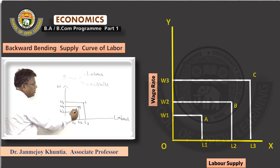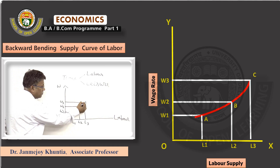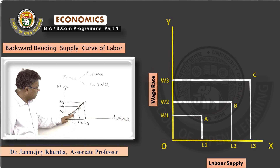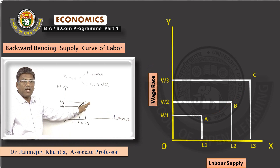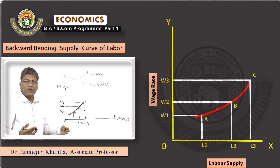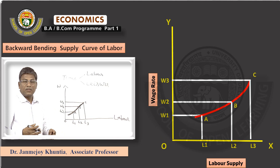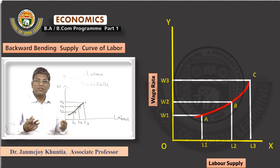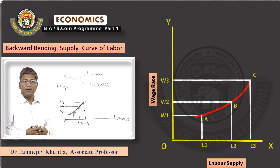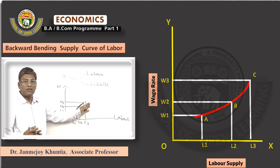Look at the locus A, B, C — join it. This is an upward sloping labour supply curve. The reason is that labour supply increases to generate more income, as the individual is at the subsistence level and needs more money. So the individual substitutes labour in place of leisure activities — the substitution effect dominates during this phase.